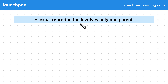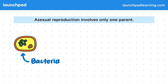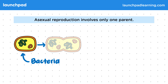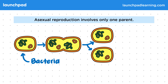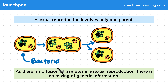Asexual reproduction involves only one parent. In fact, asexual reproduction is how most single-celled organisms reproduce, such as bacteria. As there is no fusion of gametes in asexual reproduction, there's no mixing of genetic information.